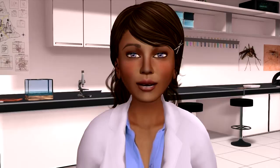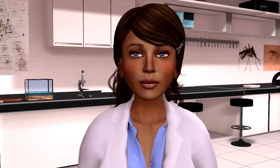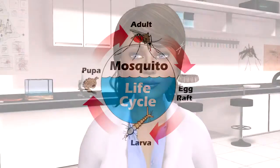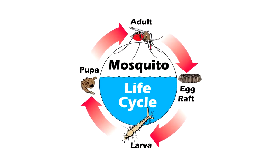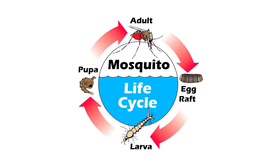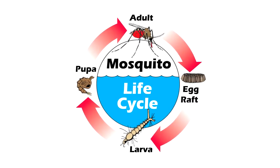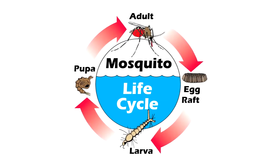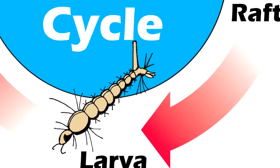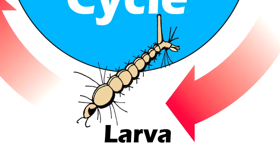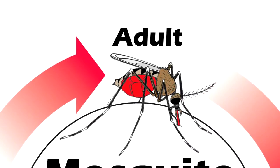The life cycle of a mosquito is similar to many insects. It only takes about six days during the summer to go from egg to adult, and there are four basic stages: egg, larva, pupa, and adult.